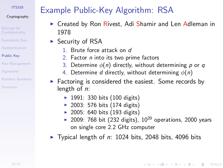RSA was designed by Rivest, Shamir, and Adleman. It's considered secure today. The best-known way to break RSA is to factor N — which is the product of two prime numbers P and Q — back into those primes. If you can find P and Q from N, you can find D and break RSA. So the strength of RSA depends on the fact that it's hard to factor large numbers into their primes.